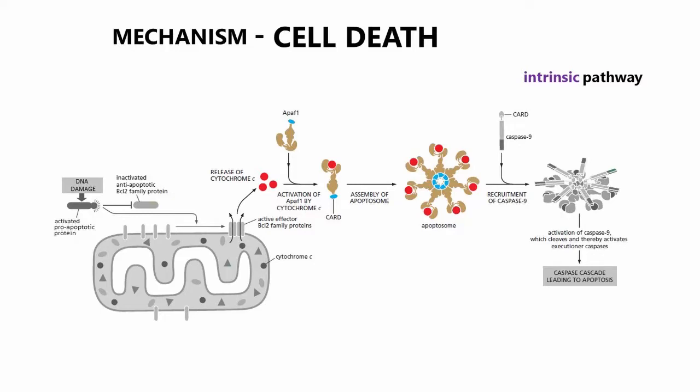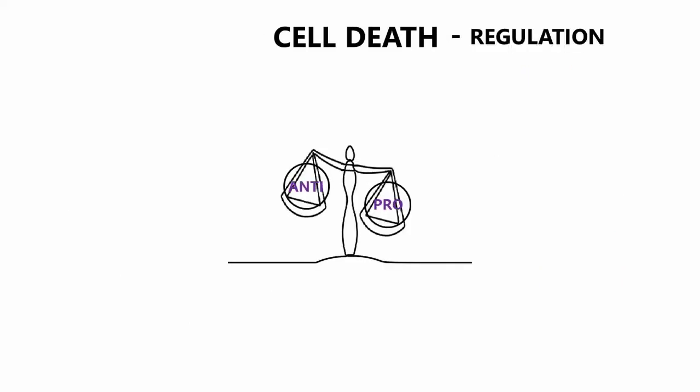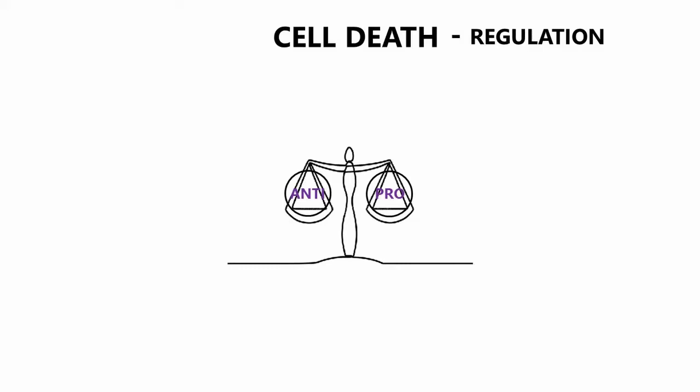Cytochrome C binds to adapter protein and forms a structure known as apoptosome. This structure recruits initiator caspases and activates it, which in turn leads to specific sequence of events mentioned before. The constant balance between pro- and anti-apoptotic BCL2 proteins ensures that apoptosis is triggered only when and where it is needed.